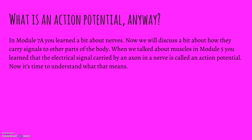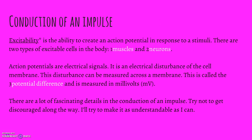Back in Module 7a last week, we learned a little bit about the nerve and the neuroglia. Now we're going to discuss a little bit about how these nerves carry signals to other parts of the body. When we talked about muscles back in Module 5, you learned that the electrical signal carried by an axon in a nerve is called action potential. So now we're going to try to understand what that means.